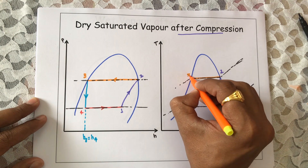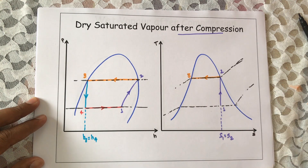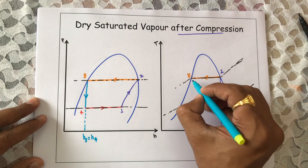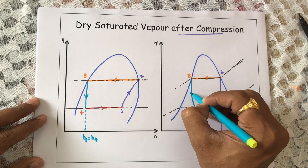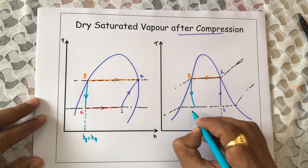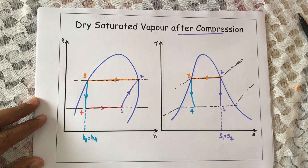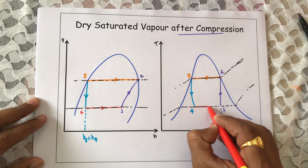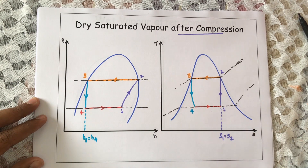Process 2 to 3 is constant pressure heat rejection. Then 3 to 4 is isenthalpic expansion. And finally, 4 to 1 is constant pressure heat addition. Now we need to calculate the values of different enthalpies.